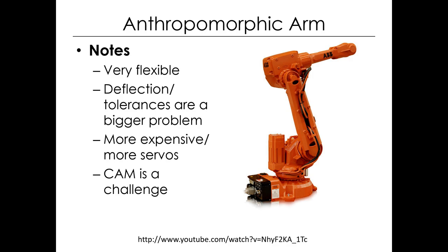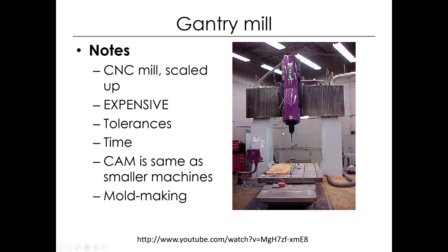Robotic arms get pretty complicated because your axes aren't always orthogonal and are actually rotating — rotating coordinate system nightmares, as those of you in Dynamics know. CAM is a challenge for these, and coming up with good path planning and motion planning for robotic arms is a big research area. A big gantry mill works just like a smaller mill — it's just bigger and more expensive. For big mold making, composite layouts, or stamping dies, you need big machines, but it works just like the smaller machines.